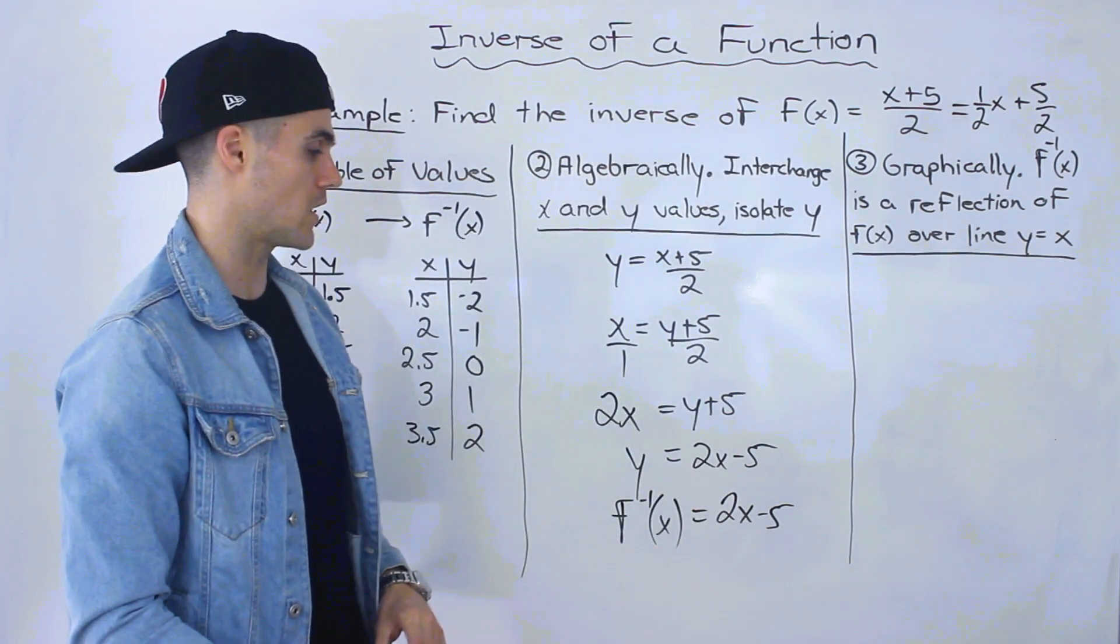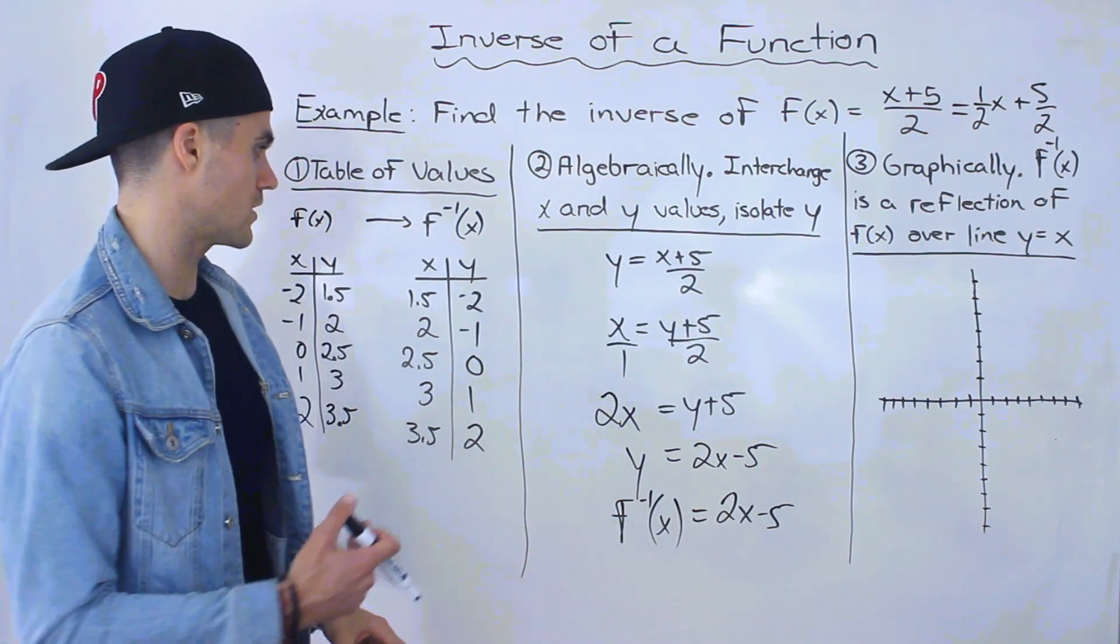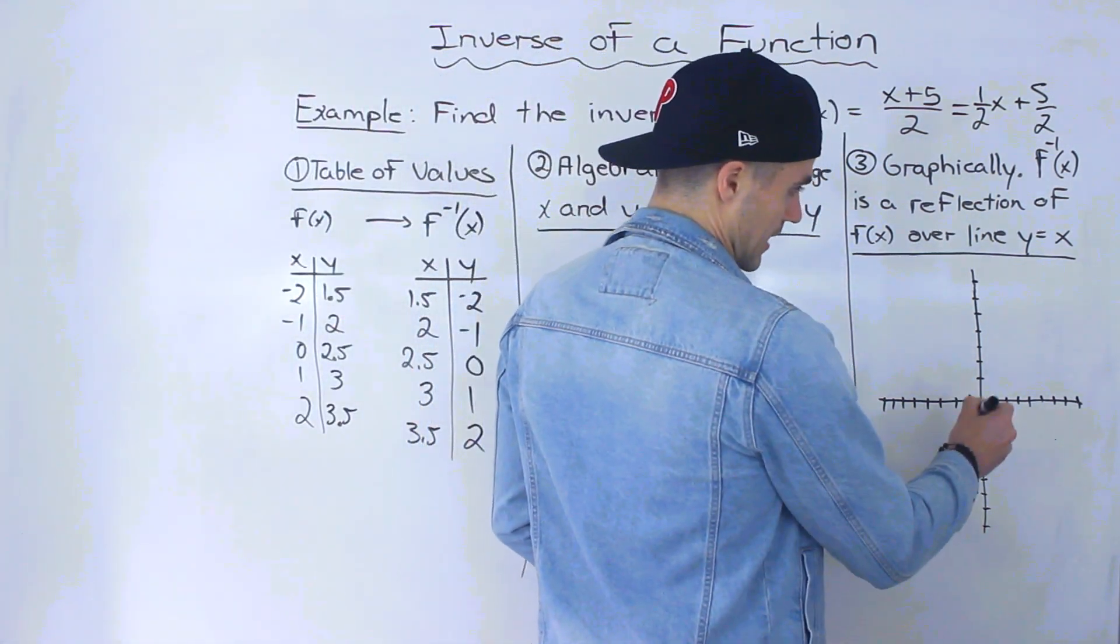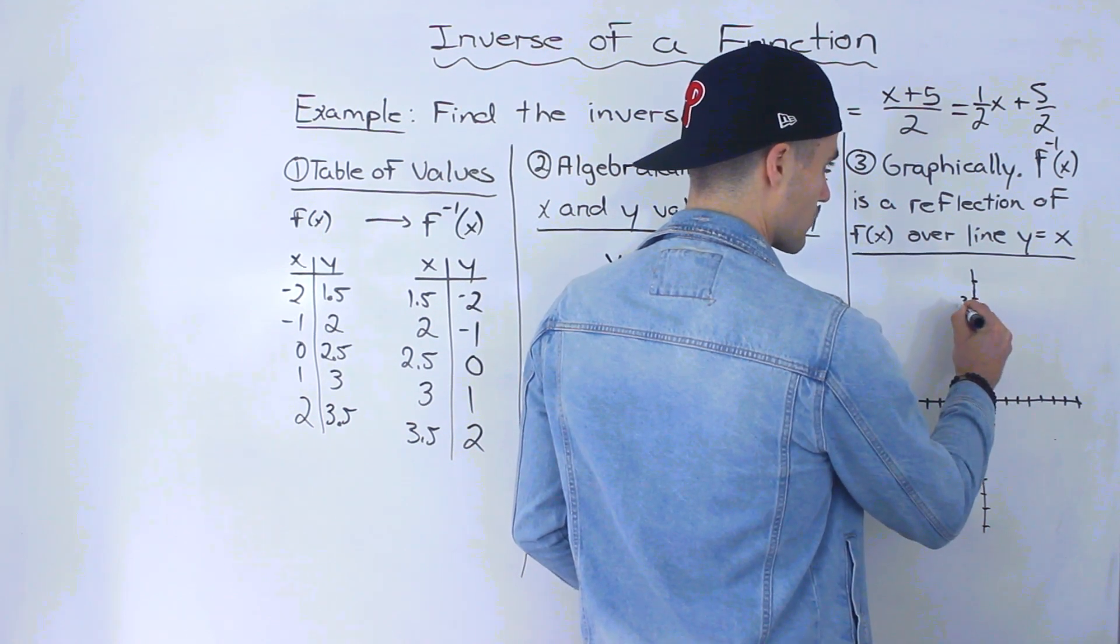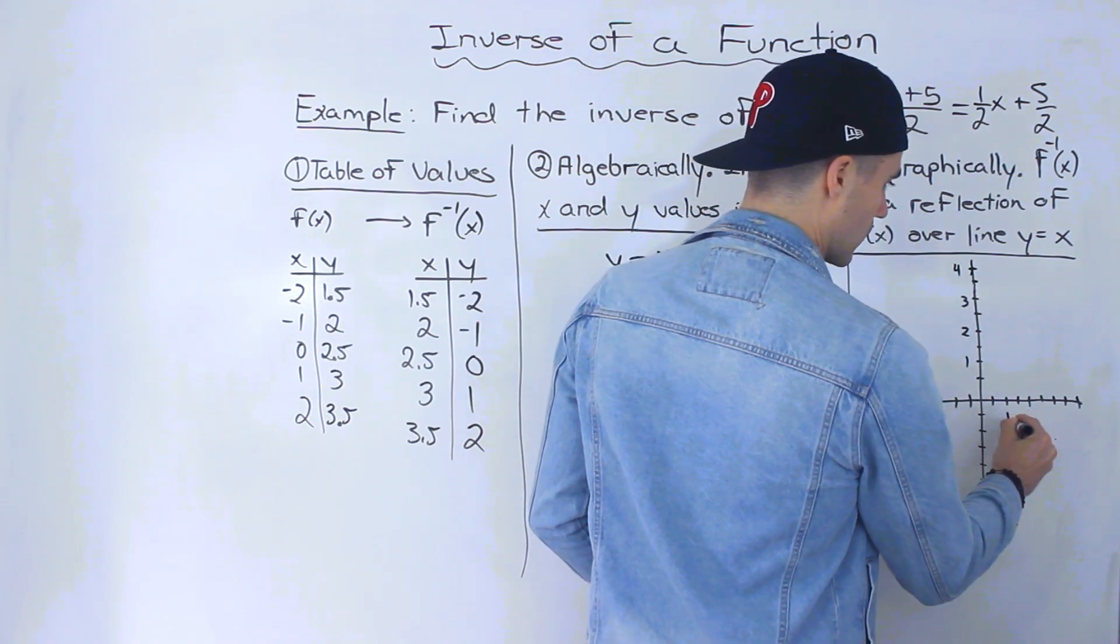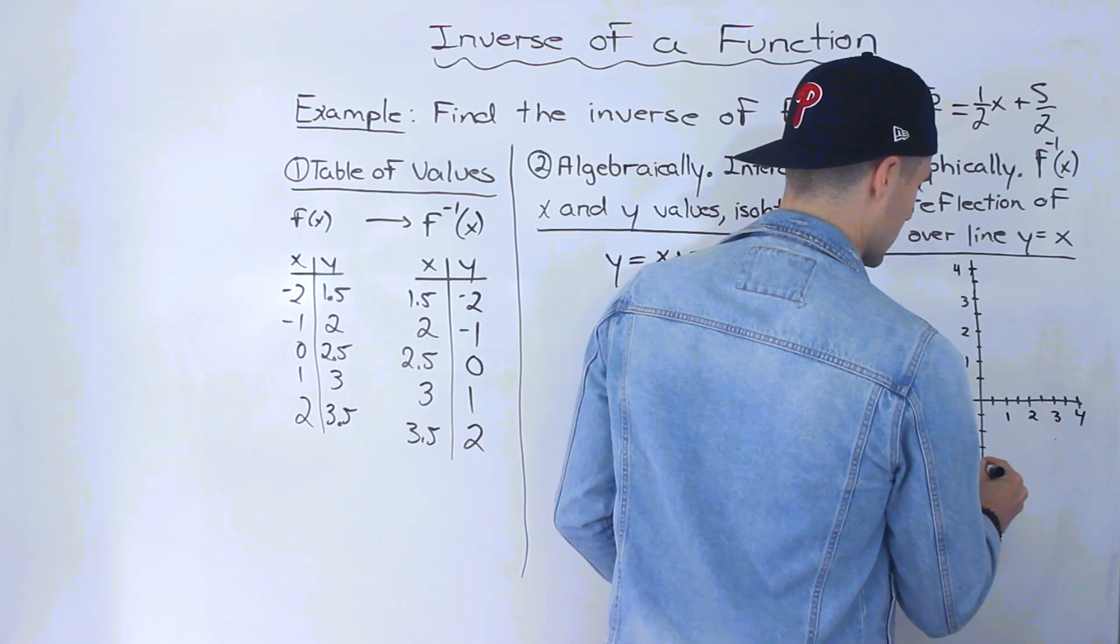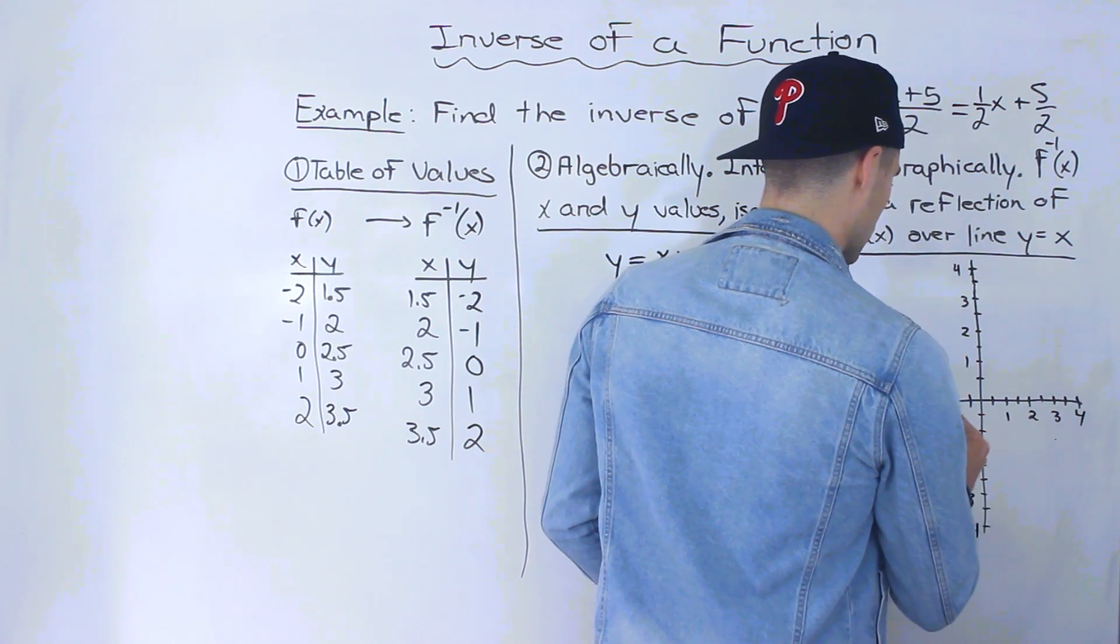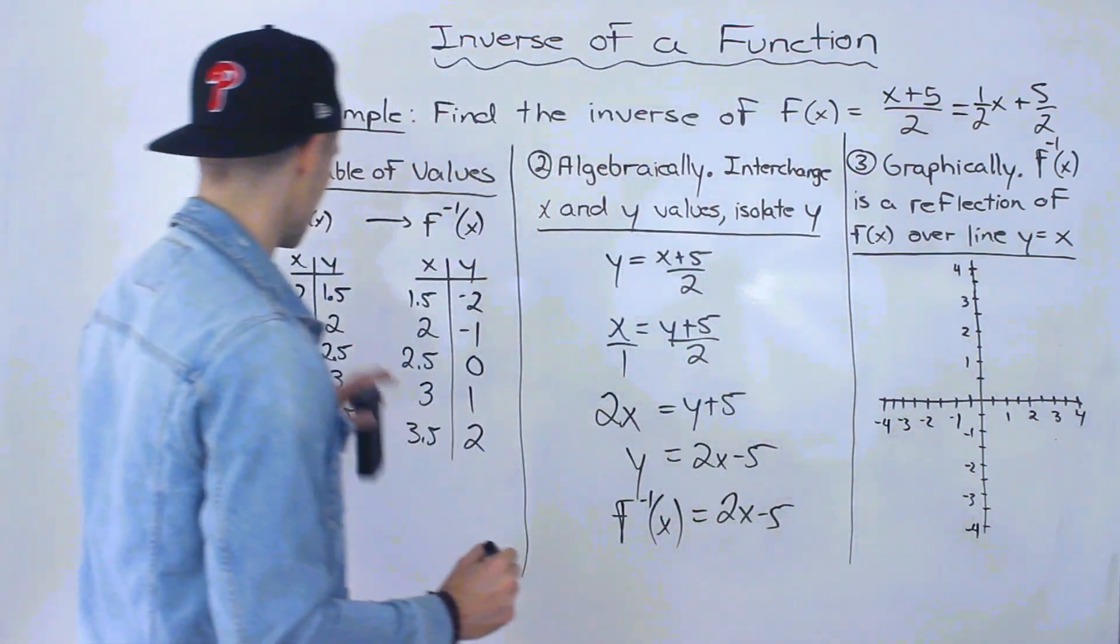And then number 3, we're going to graph the function and graph the inverse as well. So we're going to use these two tables here. So I made a scale here. Let's go up by 0.5. So this would be 1, 2, 3, and then let's add another one, that'll be 4. Got negative 1, negative 2, negative 3, negative 4. So let's start off with the function first.